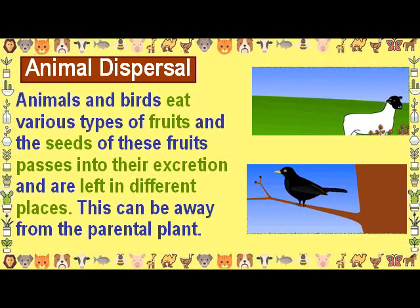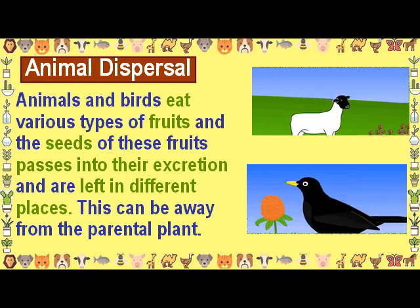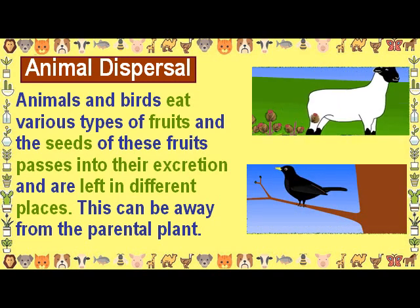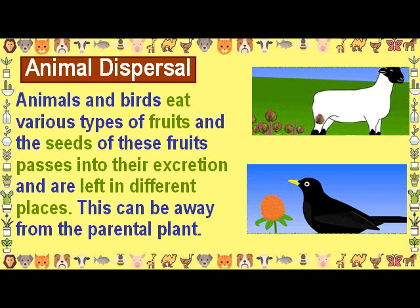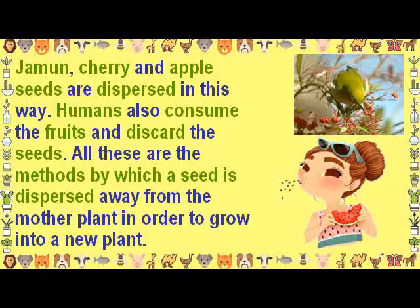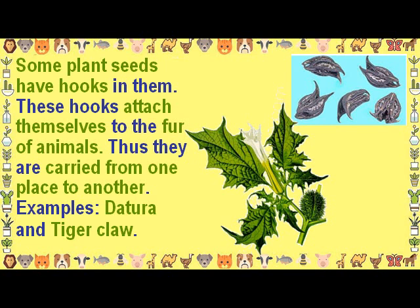Animal Dispersal. Animals and birds eat various types of fruits, and the seeds of these fruits pass into their excretion and are left in different places, away from the parental plant. Jamun, cherry and apple seeds are dispersed in this way. Humans also consume fruits and discard the seeds. Some plant seeds have hooks in them that attach to the fur of animals, carrying them from one place to another. Examples include the toora and tiger claw.